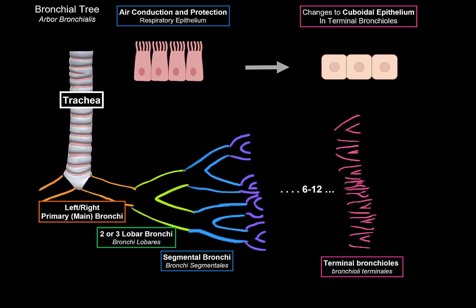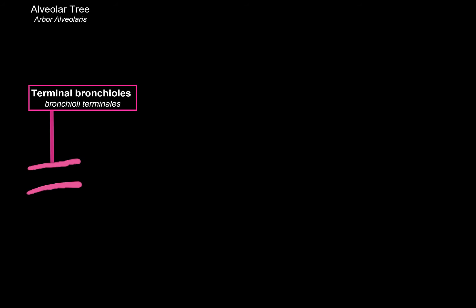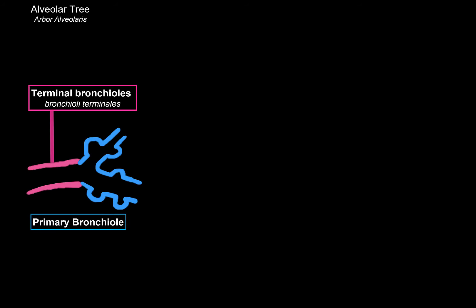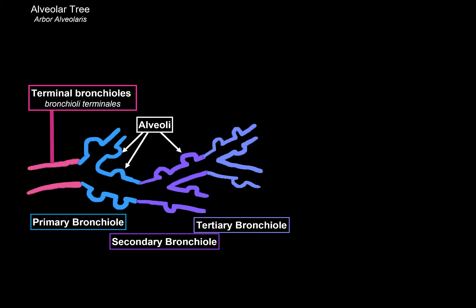This is where we say that the bronchial tree continues as the alveolar tree. We have the terminal bronchioles, which will continue as the primary bronchioles. And already here, you can see these bumps on the surface of the alveolar tree called alveoli. The alveoli are our primary area for gas exchange, so that we can receive oxygen. The deeper into the lungs we get, the more alveoli we're going to have. Secondary bronchioles are going to have even more alveoli, and tertiary bronchioles are going to have even more alveoli.